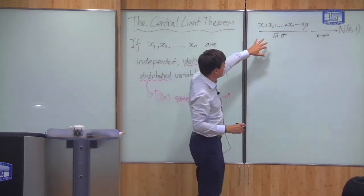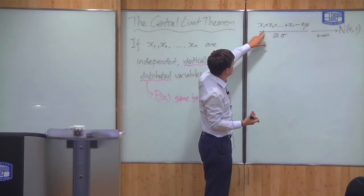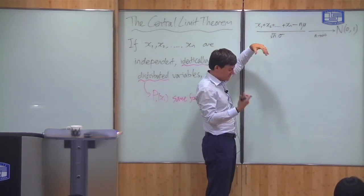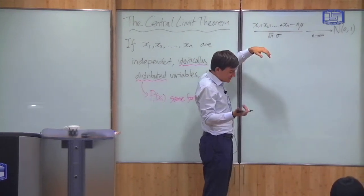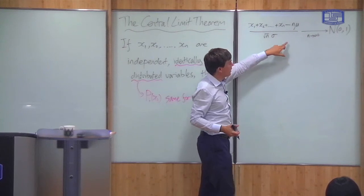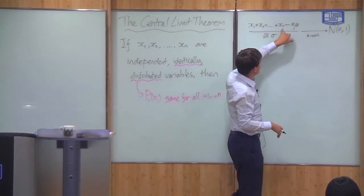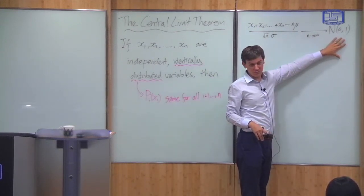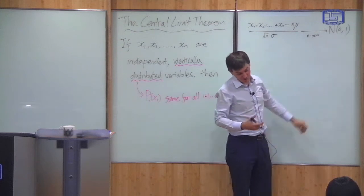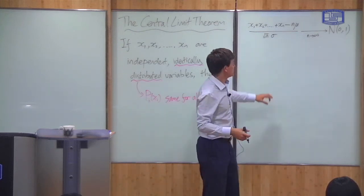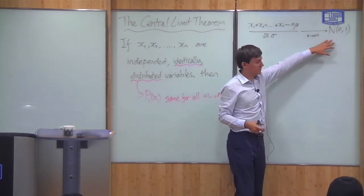So that's what it says. If I have lots of variables which have the same probability distribution and I add them all up, then if the number of variables is large, I always get a normal distribution. The sum of a large number of variables is always normally distributed.